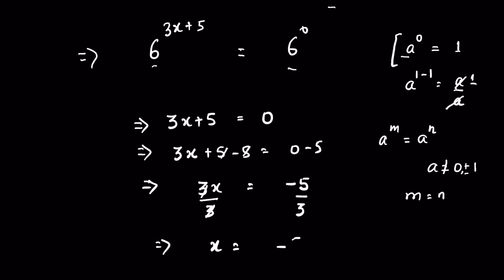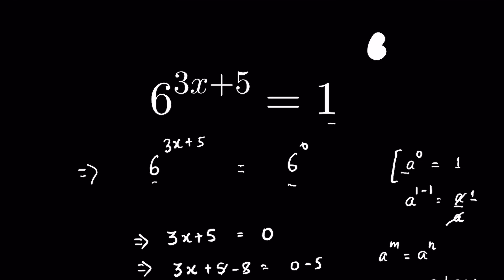This is our answer. We can check this answer by putting the value of x here. So 6 raised to the power 3x, which is minus 5 upon 3, plus 5. 3 and 3 get cancelled. So 6 raised to the power minus 5 plus 5, that is 0. And 6 raised to the power 0 is 1. So LHS is equal to RHS. Like and subscribe, thanks for watching.